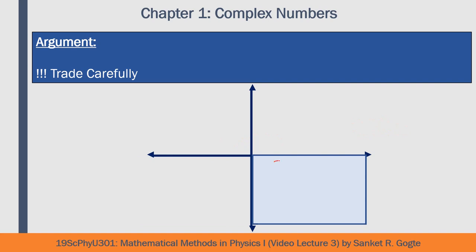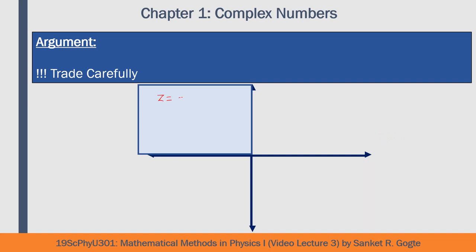Rule 3: if the real part is positive and the imaginary part is negative, the argument lies in the fourth quadrant, so it should be in the range minus pi by 2 to 0. Rule 4: if the real part is negative and the imaginary part is positive, the argument lies in the second quadrant, in the range pi by 2 to pi.